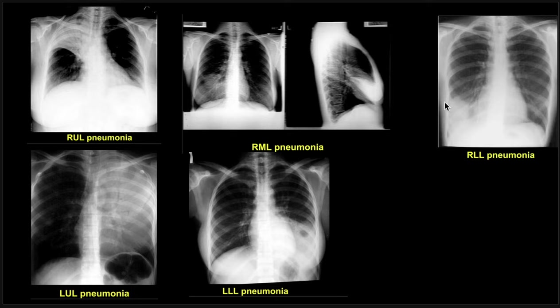Here we can see this is right lower lobe pneumonia. This is left upper lobe pneumonia and this is left lower lobe pneumonia. Right middle lobe and right lower lobe are the ones which usually get confused; otherwise all others are easy to diagnose.